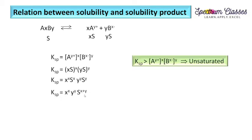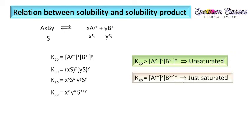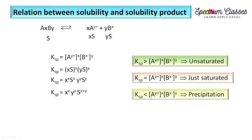From this relationship we can derive three important conditions. If KSP is greater than the ionic product, the solution is unsaturated. If KSP equals the ionic product, the solution is just saturated. If KSP is less than the ionic product, precipitation occurs.